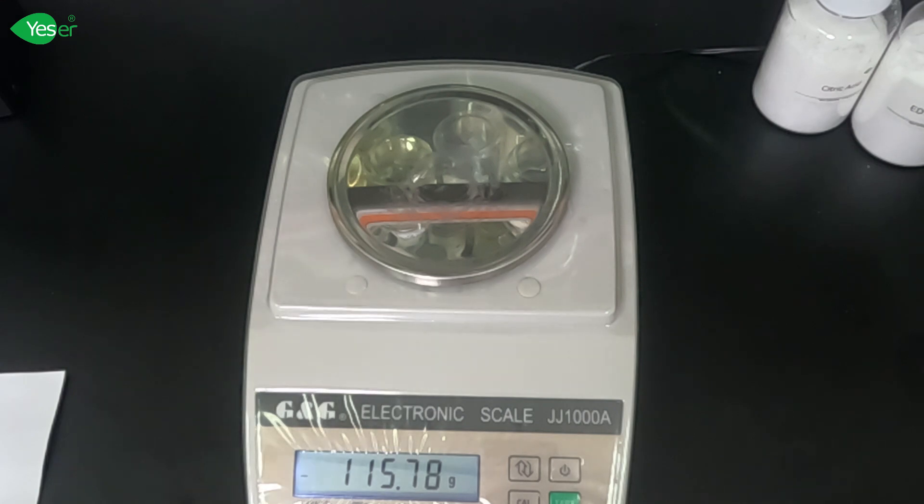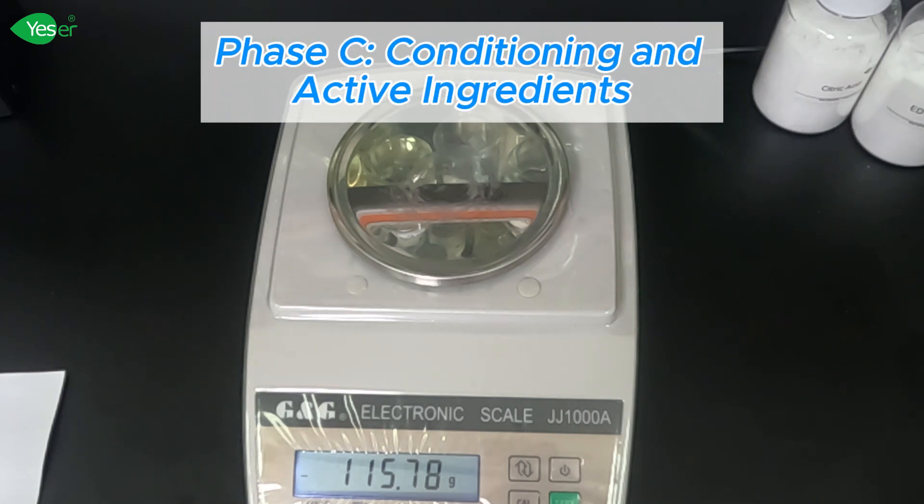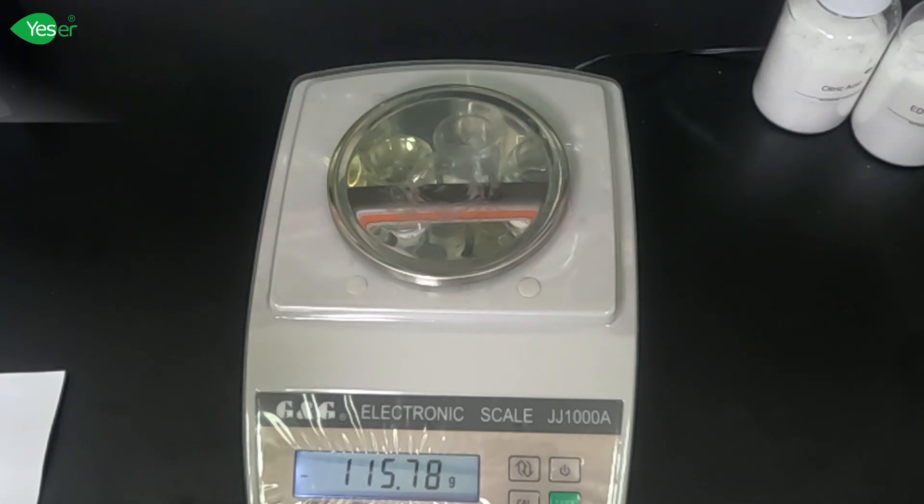Now, let's head out to our Phase C, which is conditioners and active ingredients. Let's incorporate PEG-7 glycerol cocoate, PQ-7, and hydrolyzed silk protein in the formula. These ingredients elevate the conditioning properties of the shampoo, giving it a premium feel.